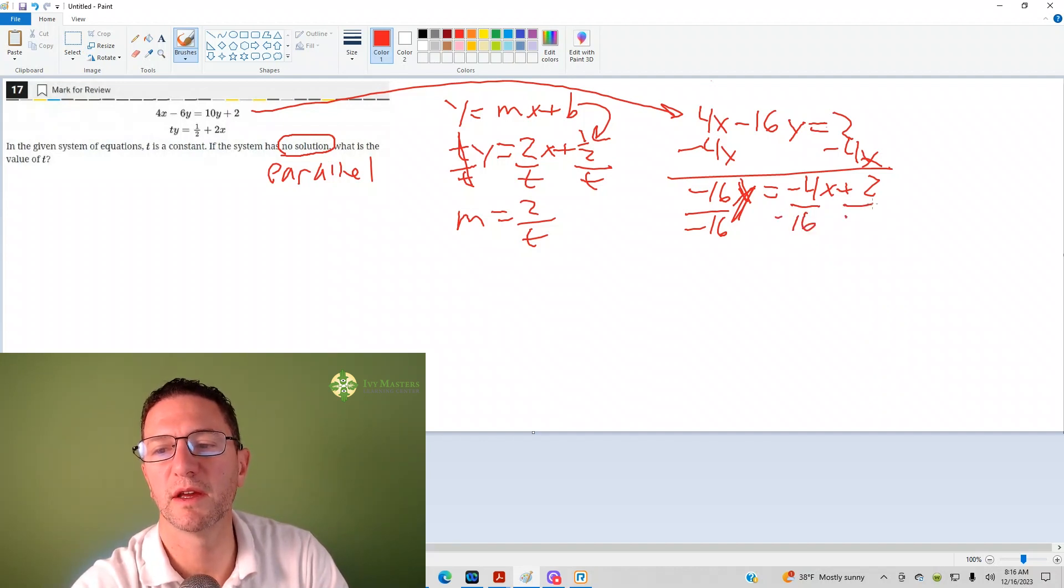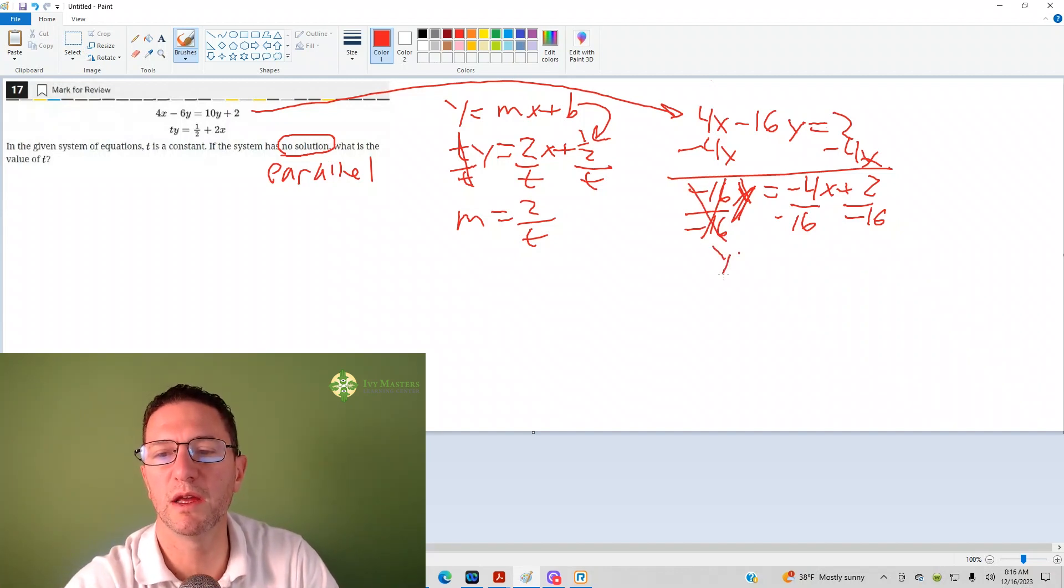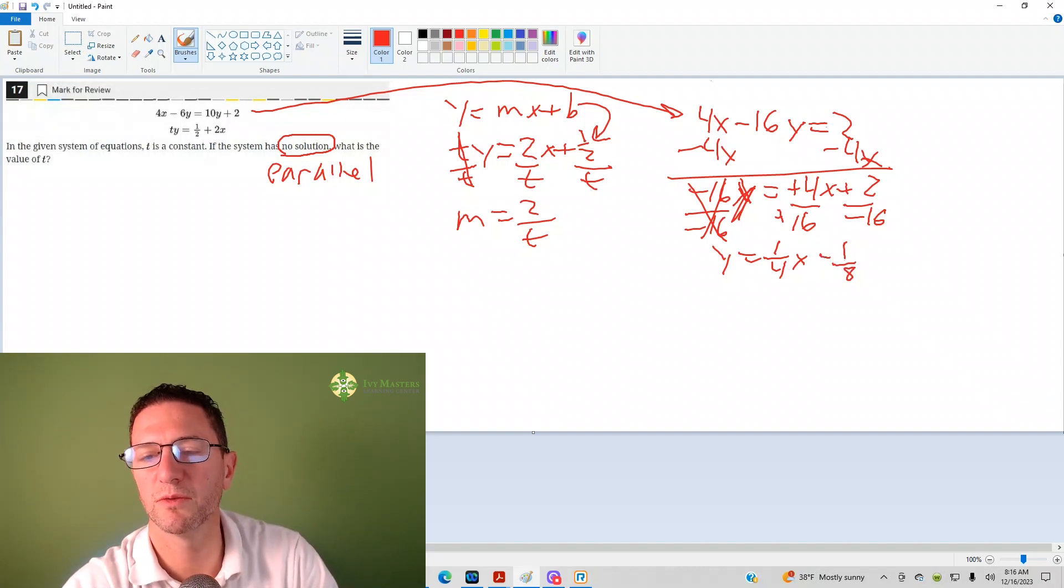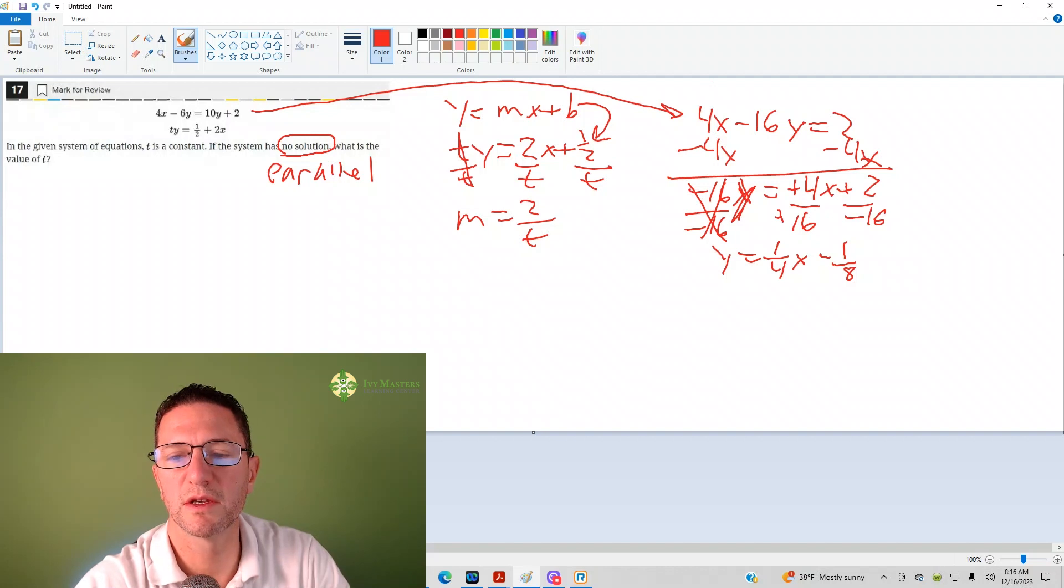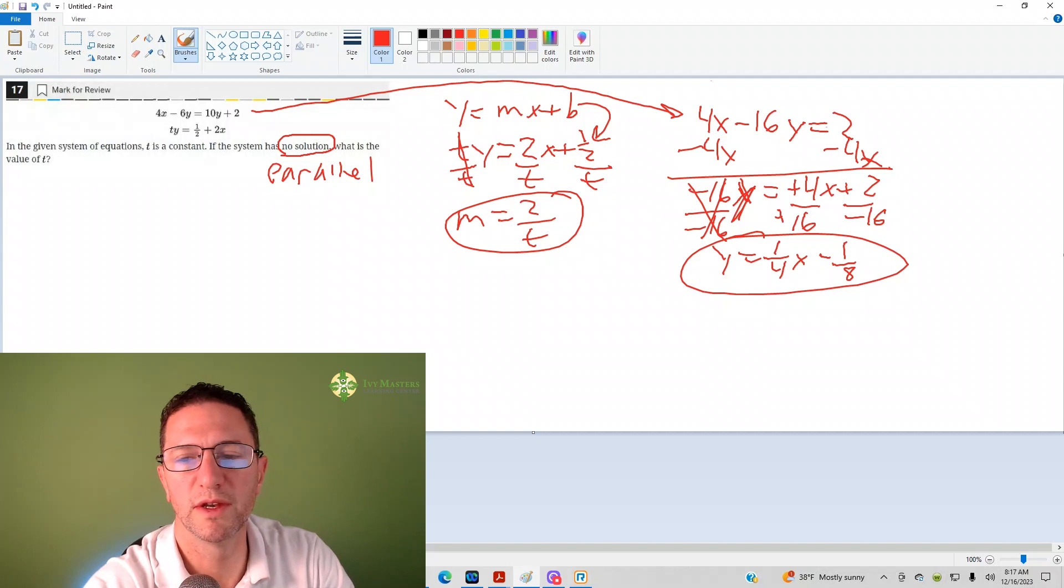Then I divide both sides by negative 16. When you divide both sides by negative 16, it's like dividing every monomial, every little thing by negative 16. So I get y equals negative over negative is positive. If I reduce 4 over 16, I get 1/4 x. And then it's minus 1/8. Well, the slope is 1/4. Here you can see the slope is 1/4. Here the slope is 2 over t.